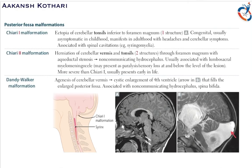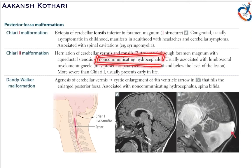On MRI of Chiari 1 malformation, we see ectopic growth of the cerebellar tonsils. In Chiari 2 malformation, there is herniation of the cerebellar vermis along with the tonsils through the foramen magnum, with aqueductal stenosis — the cerebral aqueduct becomes stenosed due to the herniation, preventing CSF flow and causing non-communicating hydrocephalus. Chiari 2 malformation is usually associated with lumbosacral myelomeningocele and may present with paralysis and sensory loss at or below the level of the lesion, and it is much more severe than Chiari 1.